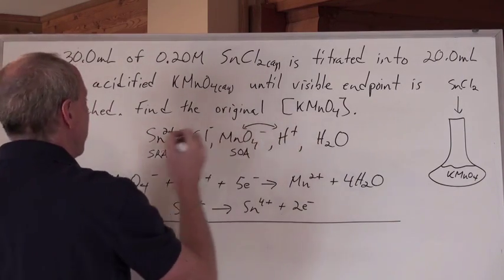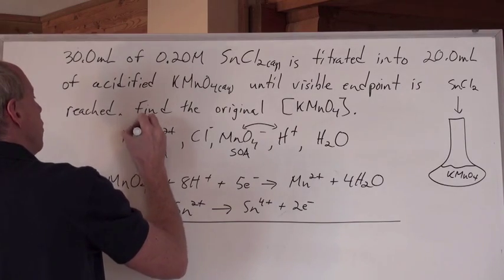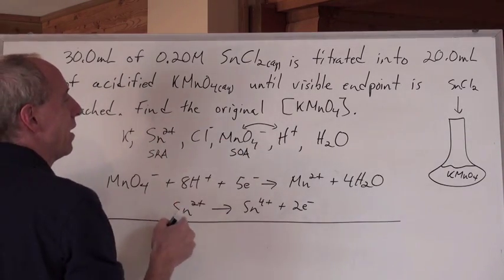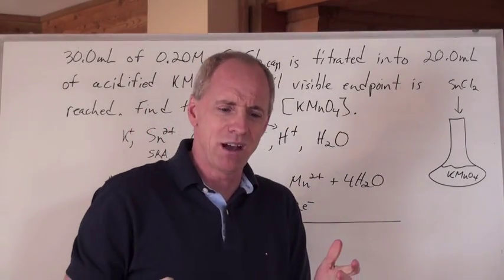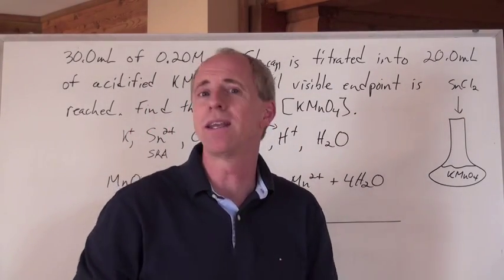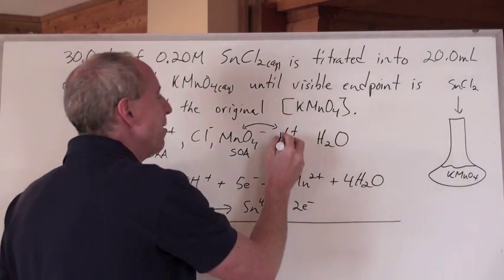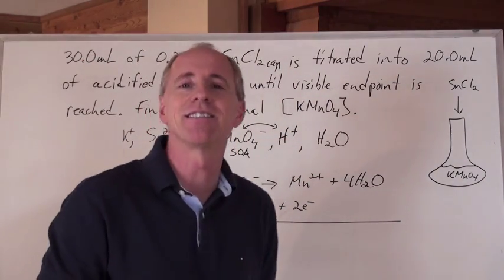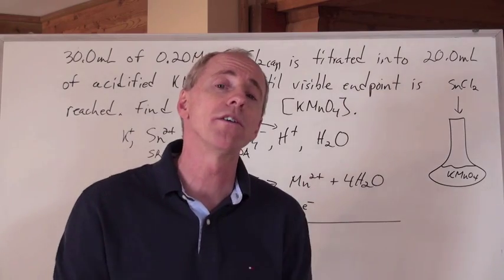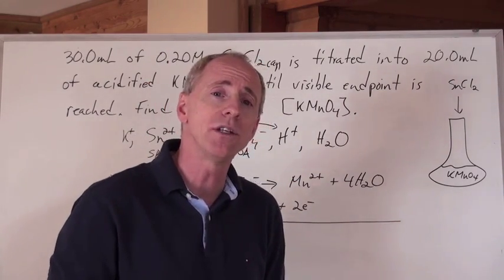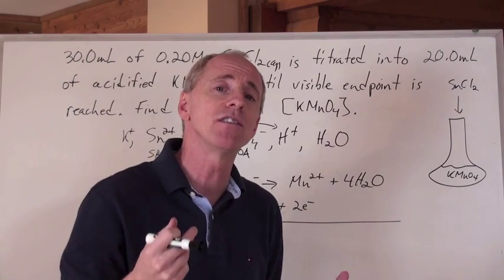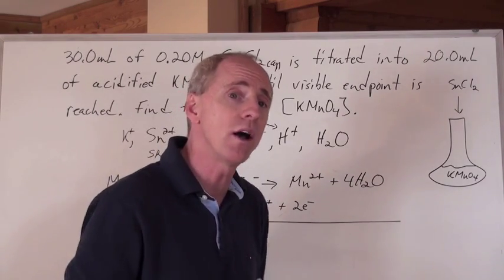By the way, I didn't write the K⁺, which is also present for the permanganate. Here's the H⁺ - I said it was acidified. Hydrochloric acid, sulfuric acid, pick one. I'm just putting H⁺ in the list because it's acidified solution. And of course, water is always present as well. Water could end up being your strong oxidizing or reducing agent, so you have to always include water.